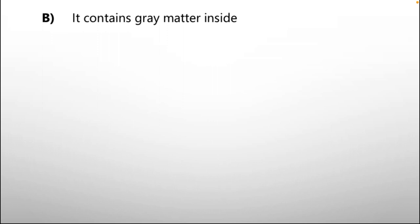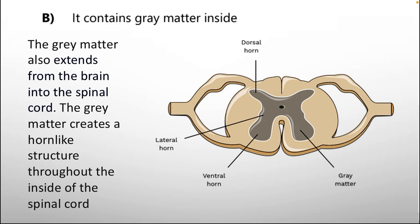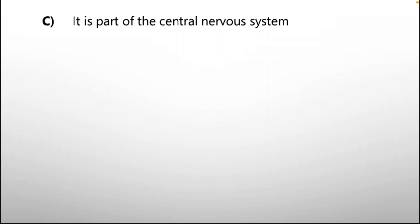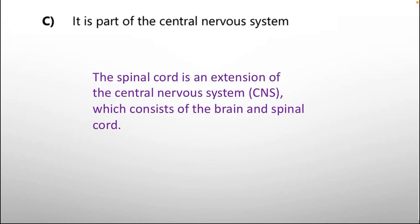Option number B: It contains gray matter inside. The gray matter also extends from the brain into the spinal cord. The gray matter creates a horn-like structure throughout the inside of the spinal cord. So this is correct. Option number C: It is a part of the central nervous system. The spinal cord is an extension of the central nervous system which consists of the brain and spinal cord. That is also correct.